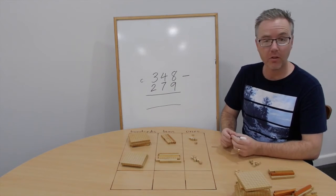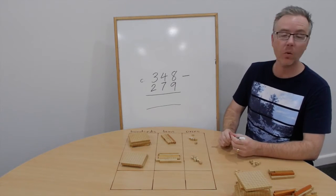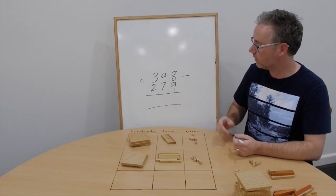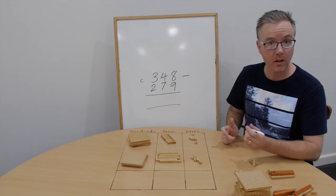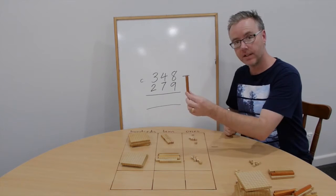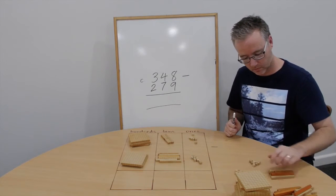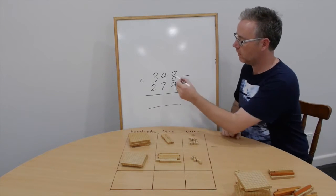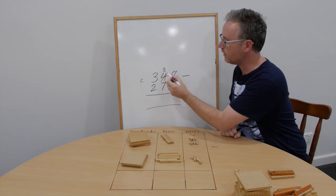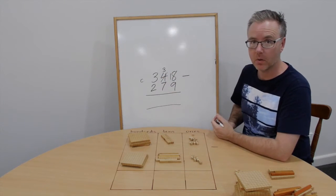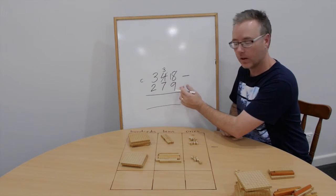Question C. 348 take away 279. 8 take away 9. Can't do. So let's trade 10 for ten ones. We now have 3 tens and 18 ones. 18 take away 9 is 9.